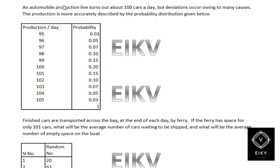Welcome to EAKV. In this illustration, an automobile production line turns out about 100 cars a day, but deviations occur. The production is more accurately described by a probability distribution. The production per day and probability table is: 95→3%, 96→5%, 97→7%, 98→10%, 99→15%, 100→15%, 101→15%, 102→10%, 103→7%, 104→5%, 105→3%.